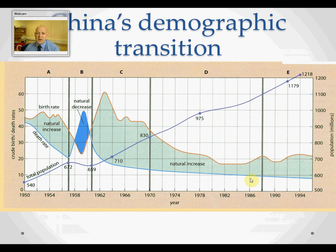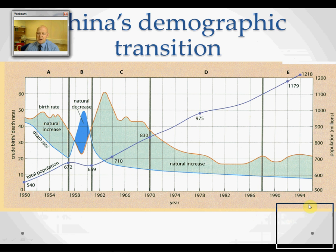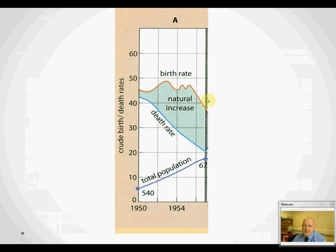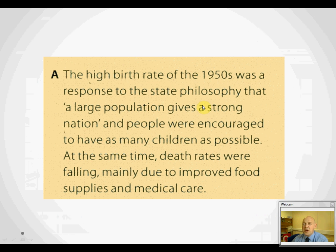China is much more interesting. Here is a resource taken from David Ward's book, The Integrated Approach. He's divided the demographic history of China into stages A, B, C, D, and E. The birth rate is in orange, the death rate is in blue, and the total population is in purple. Here's stage A: death rates coming down, birth rates coming down — clearly looking like the beginnings of demographic change. China post-Second World War wanted a big country; it had Russia to the north and wanted to make sure it had a large population to give a strong nation.